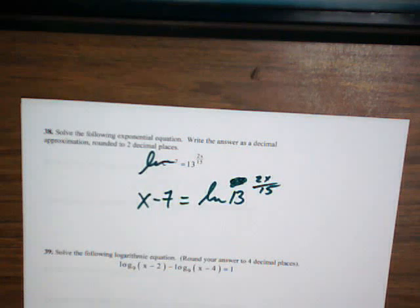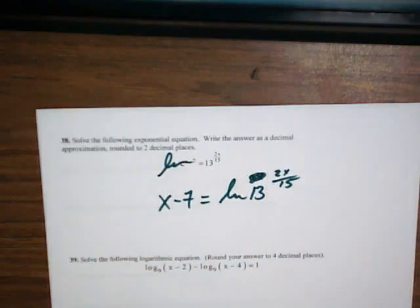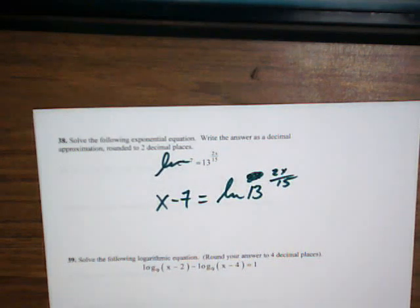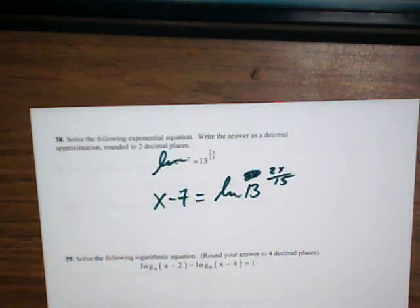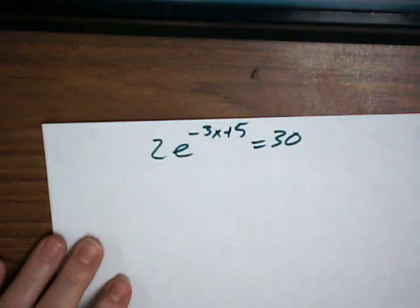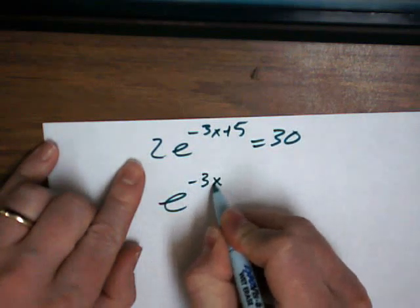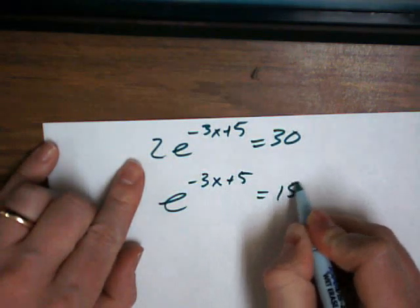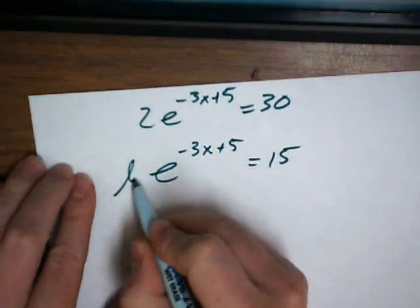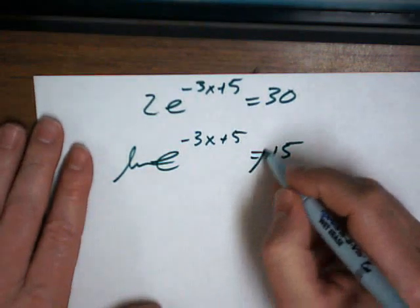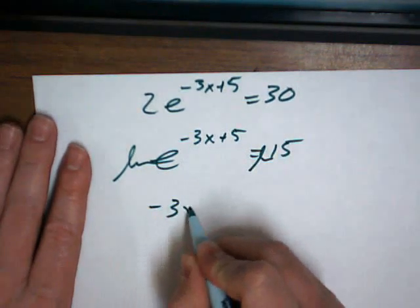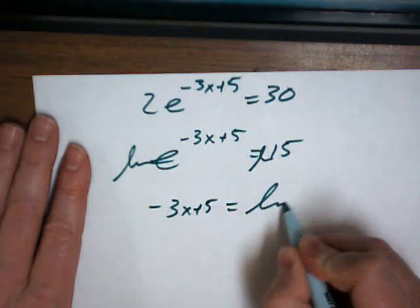Number 41. So let's look at it. 2e to the negative 3x plus 5 equals 30. So first off, I want to divide by that 2. So I divide everything by 2. We've got to get rid of the e with an ln. Natural log gets rid of it, but you do it to both sides. So negative 3x plus 5 equals the natural log of 15.